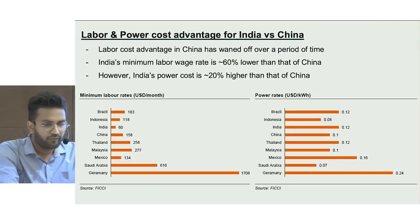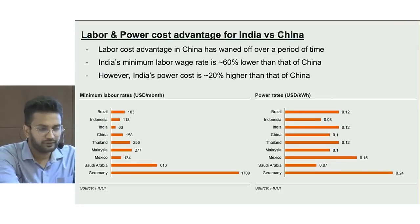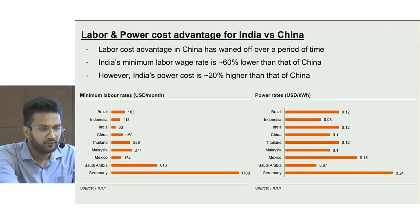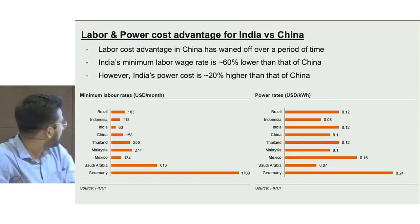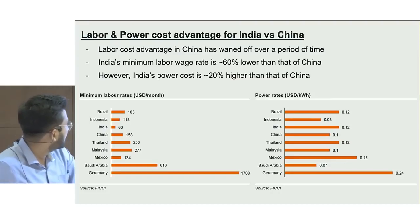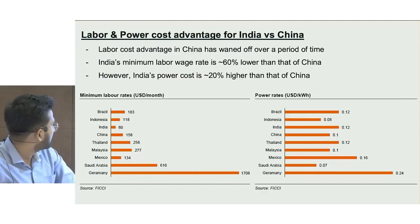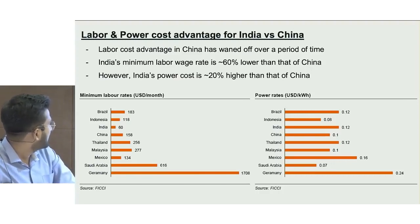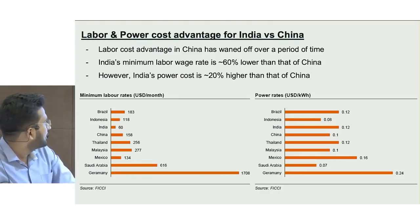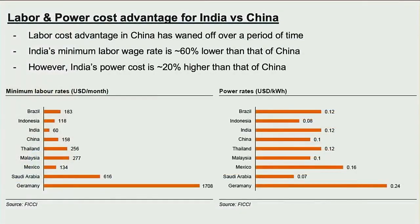India has several advantages versus global peers. India remains the lowest in terms of labor cost compared with developing and developed countries. On the power front, India is cheaper than most countries, though 20% higher than China.